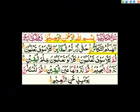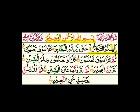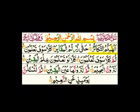Bismillahirrahmanirrahim. Alhakumut takasur. On the ha, there is a standing fatha. If any letter has a standing fatha on it, we need to prolong that letter equal to one alif. We pronounce ha from the bottom of the throat and prolong it equal to one alif. Alhakumut — and this is connected with the ta, and between meem and ta there are two letters with no movement, so they are silent letters.